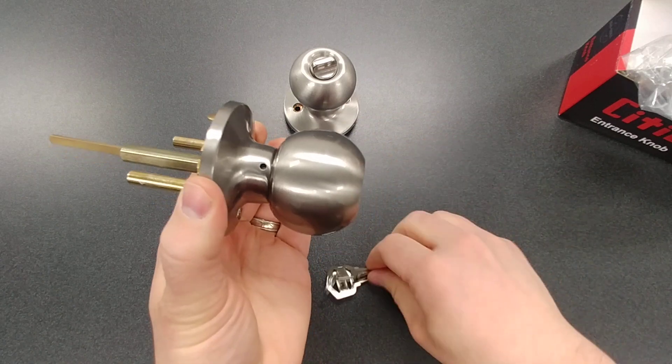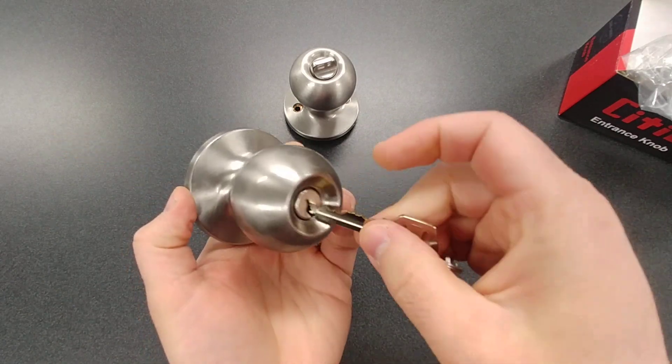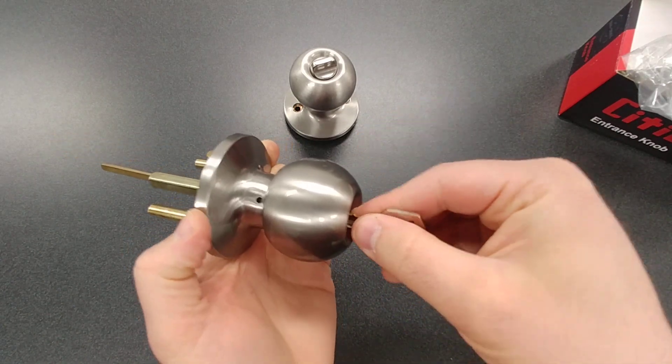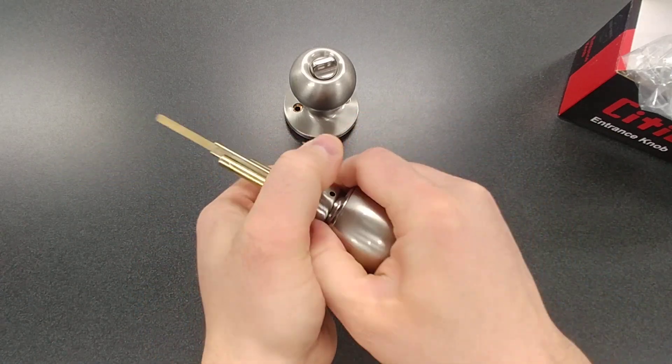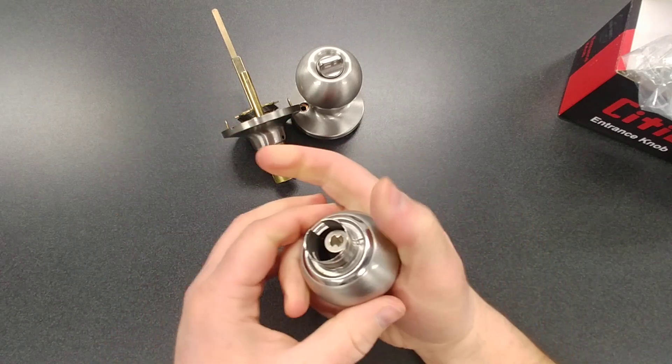Now, before you go to take the knob completely off, it's always good to take the key and just stick it in there like this, and that'll make sense here in a moment. Once you got it like that, you can just pull it all the way off, set that part aside.